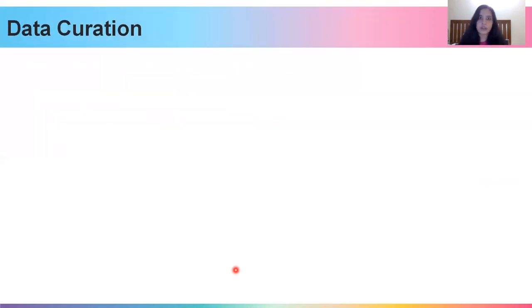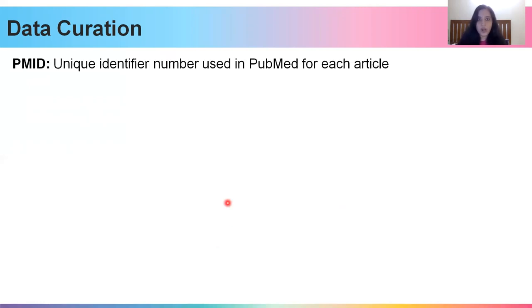The next step in creating our database is data curation. We finished the literature survey and have all our papers. Now, how do we extract relevant information from these papers so that it can help us downstream with further annotation and analysis? There are several points that most LSDBs offer to help present collected data in a structured manner. The first, of course, is the PMID, which helps us backtrack and locate where our entry is actually coming from.